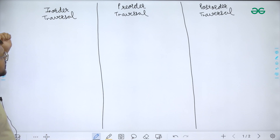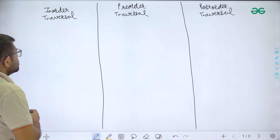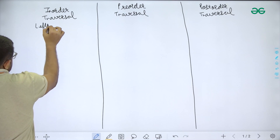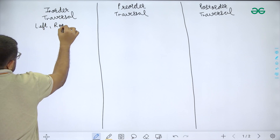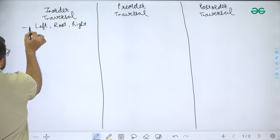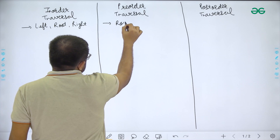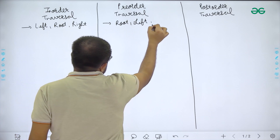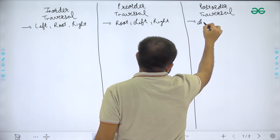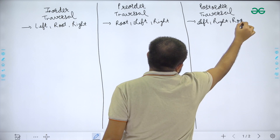The first one is the in-order traversal method, another is the pre-order traversal, and another one is the post-order traversal. In in-order traversal we first traverse the left subtree, then we note down the root node value, and then we traverse the right subtree. In pre-order traversal we first traverse the root node, then the left subtree, and then the right subtree. In post-order traversal we first traverse the left subtree, then the right subtree, and then the root node.